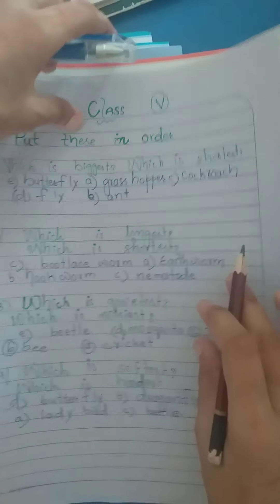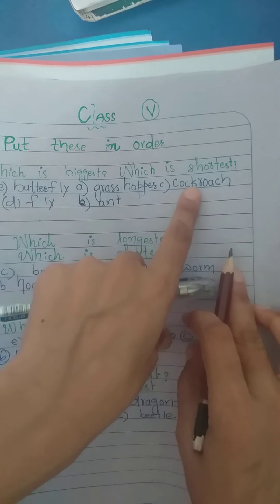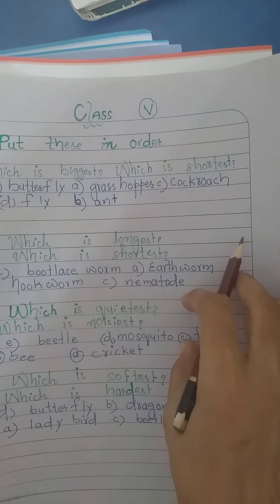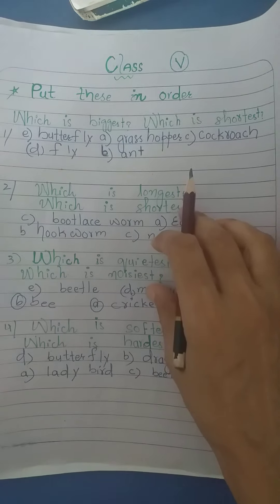Butterfly. Butterfly is largest. Then we have grasshopper and then cockroach and then fly and ant. So these all are in order, that which is biggest and which is shortest.